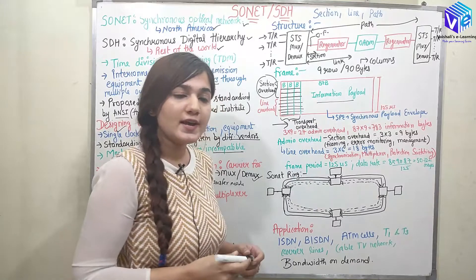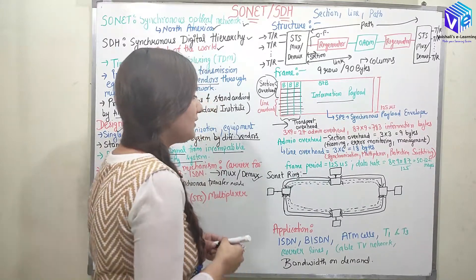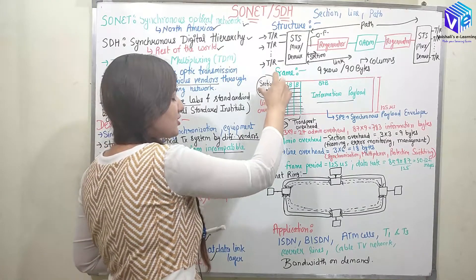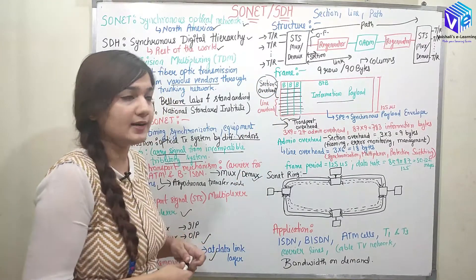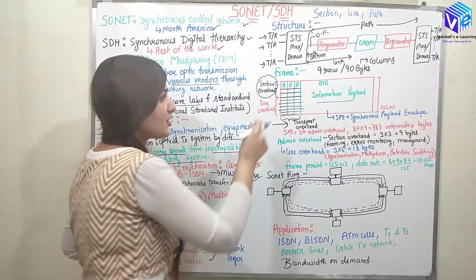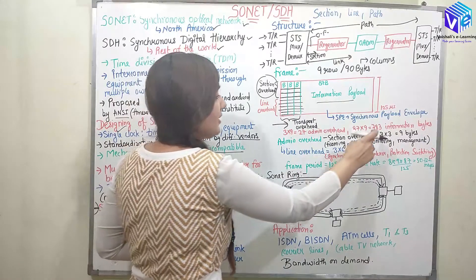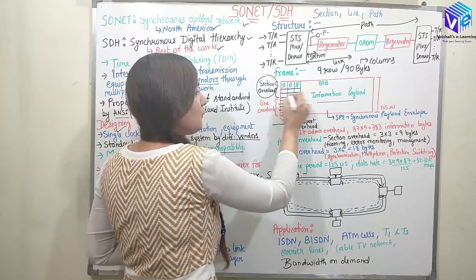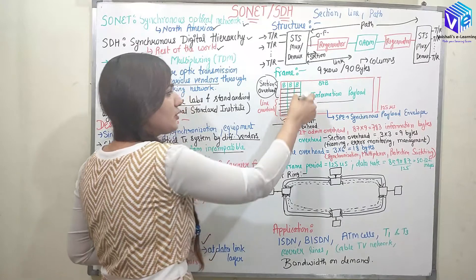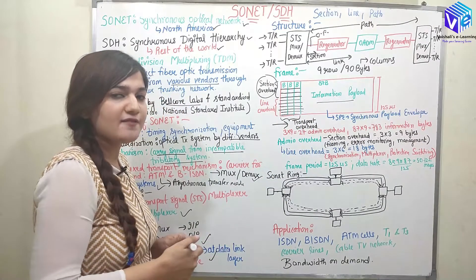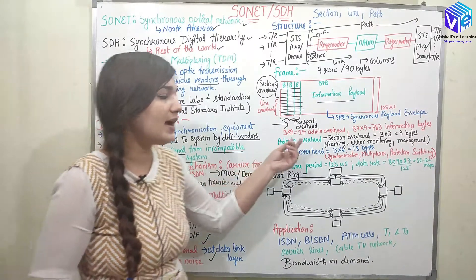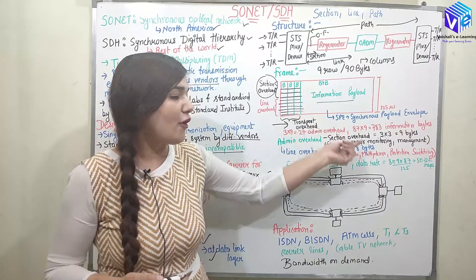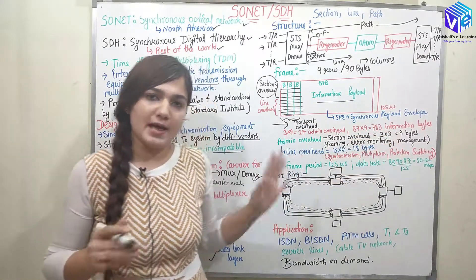The transport overhead is also called the admin overhead, divided into section overhead and line overhead. The section overhead has three rows and three columns, giving nine bytes. It is used for framing, error monitoring, and management.